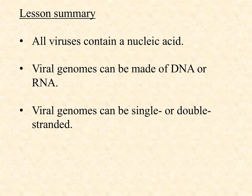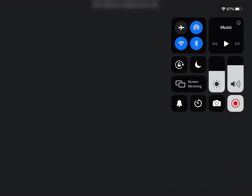Quick lesson summary: all viruses must contain a nucleic acid — it's the information conveyed to the host cell for making more copies of the virus. They can be DNA or RNA, and they can be single-stranded or double-stranded. You learned four different examples today. In the next video we are going to discuss the capsid — the protein coat that protects the nucleic acid and ensures it can get from one host cell to the next.